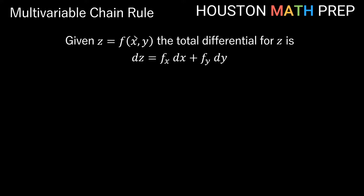If we have a function of both x and y, then our differential is actually in terms of really small changes in both x and y. So if z equals our function, the total differential for z equals the partial derivative with respect to x times dx, plus the partial derivative with respect to y times dy.